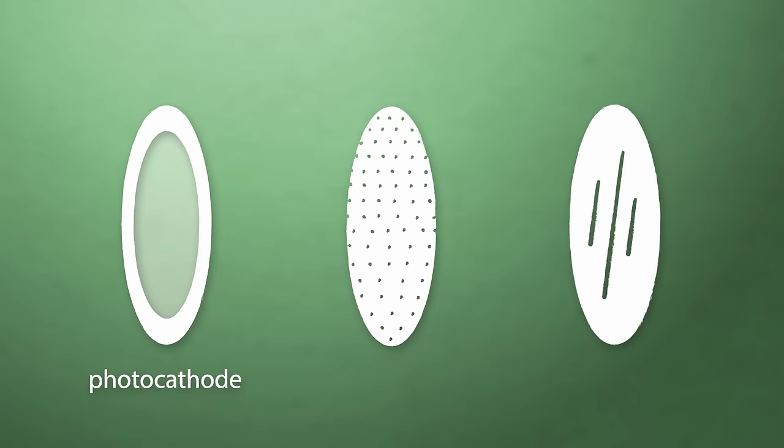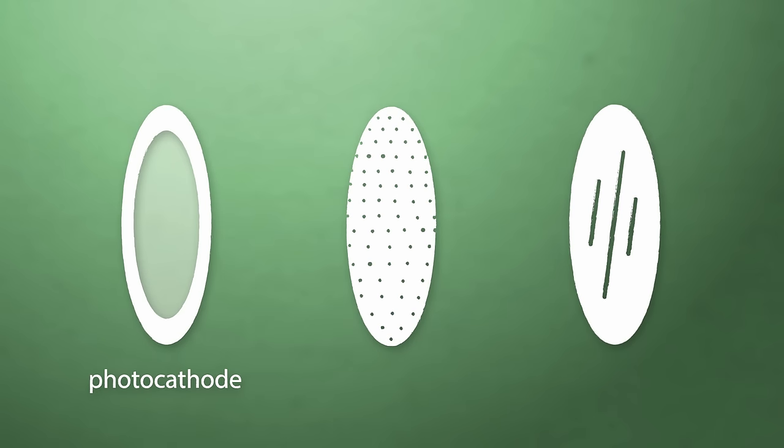Image enhancers use a photocathode to convert photons into electrons, and high voltage to amplify those electrons in a microchannel plate, or MCP, before they hit a screen coated with phosphors.